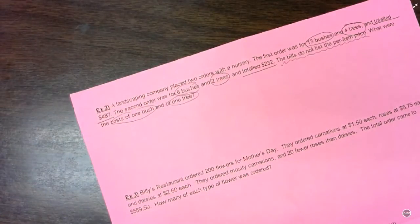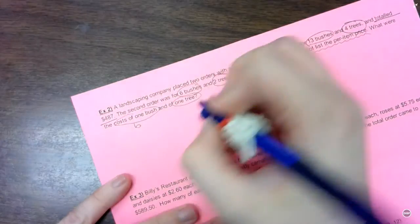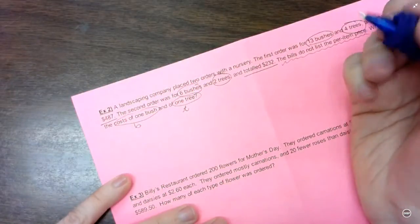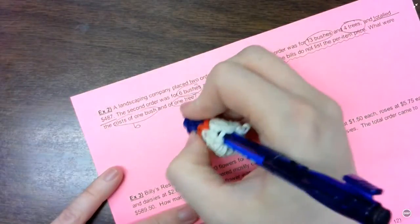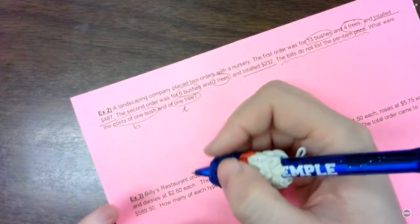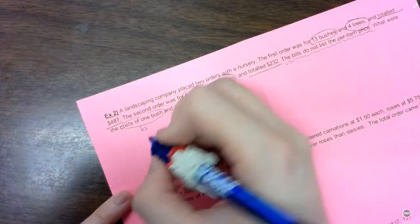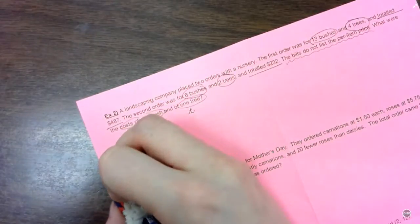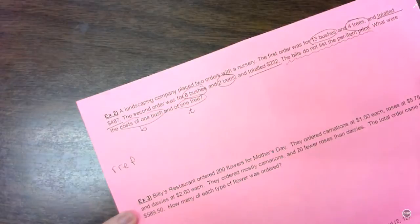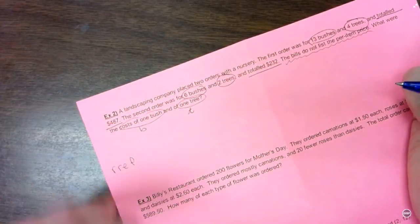So again, the first thing I want to do is figure out what are my variables. What am I looking for? And I'm looking for the cost of a bush and the cost of a tree. So I'm just going to use B and a little cursive T so it doesn't look like a plus sign. And I'm going to go ahead and set up my matrix. And again, I personally prefer reduced row echelon form. But if you prefer the inverse matrix method, that's fine.